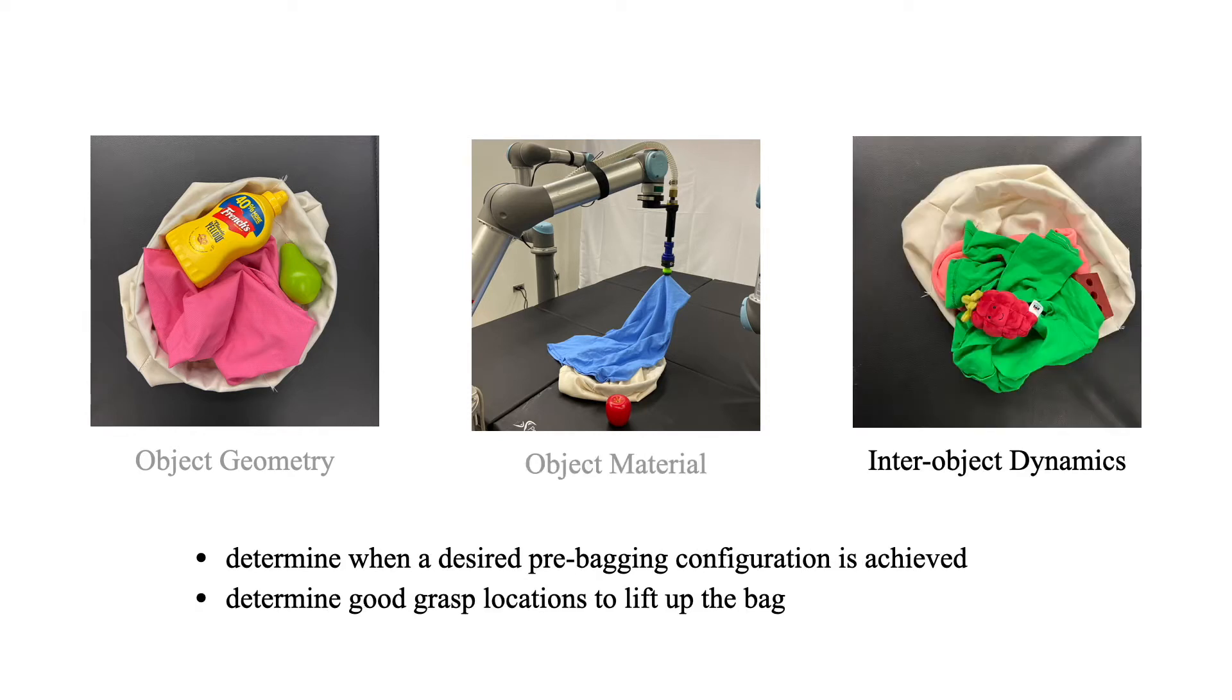And lastly, the inter-object dynamics. Learning what configuration could lead to objects falling in after a successful lift, which we call a good pre-bagging configuration, and where to lift from is non-trivial. For instance, in this example, the lift points denoted in red are bad ones since the objects are likely to fall out when lifted, whereas the one denoted in blue is a good lift point.